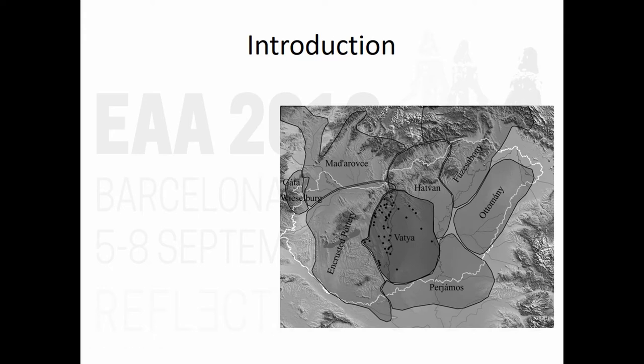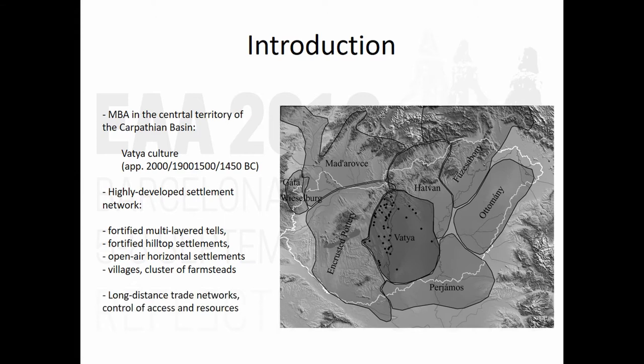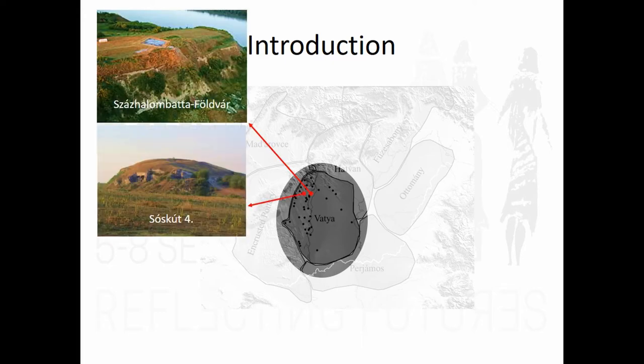I will shortly emphasize some points from the introduction but not go into detail again because it's getting boring about Kakucs. So we have the Vatya culture we already know, and we have the different types of settlements within the central area of the Carpathian Basin during the Middle Bronze Age. As we have mentioned previously, we have different types of settlements on the Western Bank and on the Eastern Bank of the Danube.